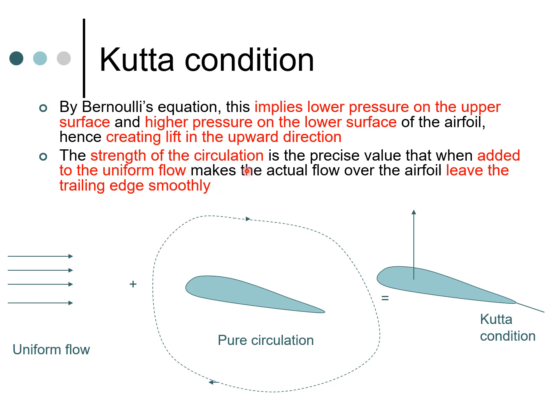There is going to be a certain value of circulation which when you add it to the uniform flow is going to enforce the Kutta condition. Or in reverse, if you enforce the Kutta condition, then essentially you can calculate the value of circulation which is there in the airfoil. So now these concepts are very useful.